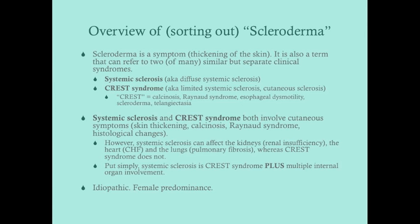We're going to talk about scleroderma, which is very complicated — partly because scleroderma as a syndrome is complicated, but also because the nomenclature gets mixed up a lot and people don't refer to it in proper ways. Scleroderma can refer to a symptom and it can refer to a set of multiple different syndromes. When scleroderma is referred to as a symptom, it simply means thickening of the skin.